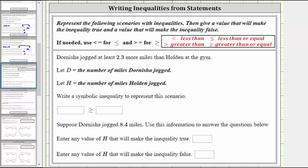Therefore the inequality is D, the number of miles Dornisha jogged, is greater than or equal to H, the number of miles Holden jogged, plus 2.3.